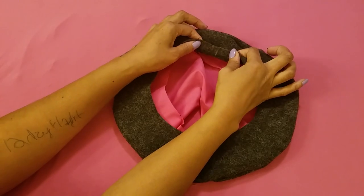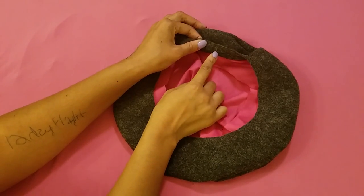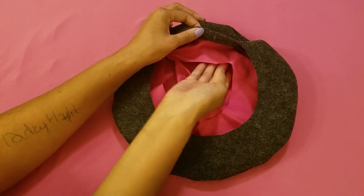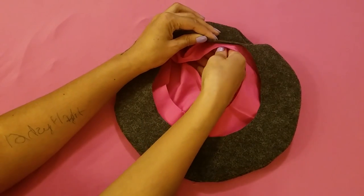Then you will look on the inside to see where you put those notches before, and then find those notches on the lining and line them up.